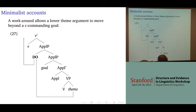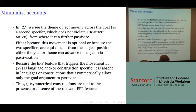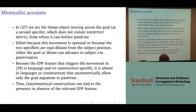You may wonder what a second specifier is. That movement didn't violate shortest move because of the technical definition of equidistance — either because that movement is optional or because the two specifiers are equidistant from the subject position — so either the goal or theme can eventually advance to subject through passivization. The trigger for that theme movement is a stipulated EPP feature that forces the movement.